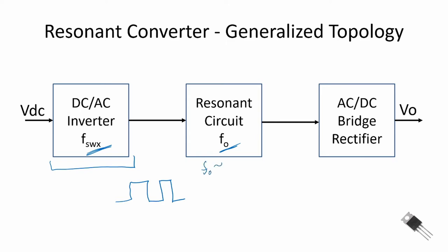F sub 0 and F sub switching are close in frequency, but we will be controlling the switching frequency to control the output or the voltage output of our resonant circuit.